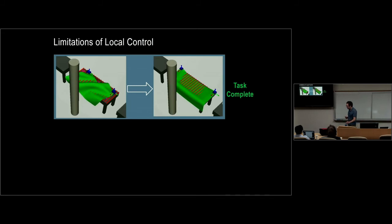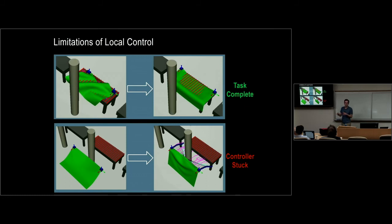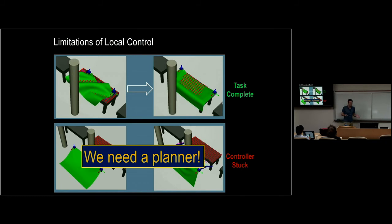That was local control approaches. But I'm interested in where this fails. When we're close to the goal, we're okay. But what about when we start on the other side of an obstacle? The simple controllers won't know how to get around it. To do that, we require some kind of global reasoning — thinking about geometry and collision-free paths. That means motion planning.